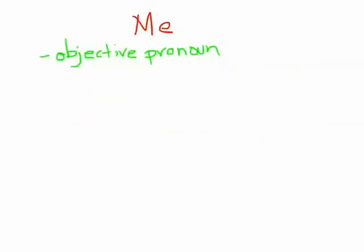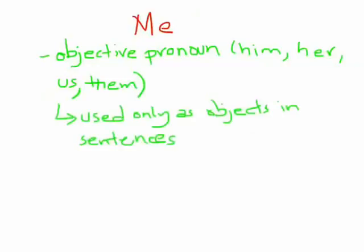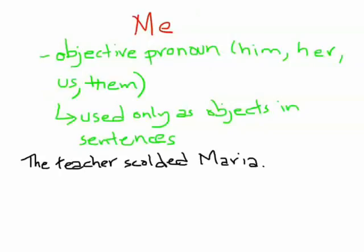'Me' is an objective pronoun like him, her, us, and them. These pronouns are used only as objects. This means that they are used in place of the noun that the action is being performed upon. For example, 'The teacher scolded Maria.' Here, Maria is the object because she is being scolded by the teacher.